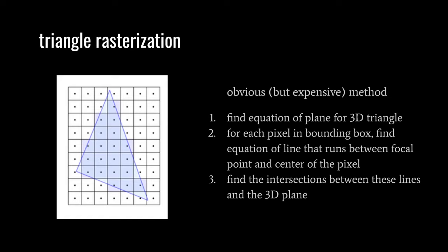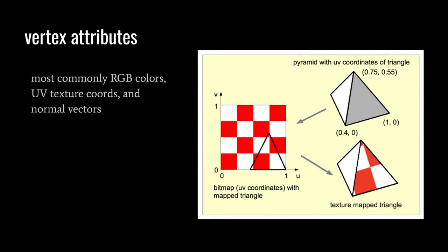The other problem with this method is that what we really want to know about a pixel is not the corresponding 3D Cartesian coordinate, but interpolations of vertex attributes. Vertex attributes can be whatever we want — data associated with each vertex that has meaning in how we want to render. The most common kinds are RGB colors, UV texture coordinates, and normal vectors. Color values determine pixel colors, and normal vectors influence lighting calculations. Generally we want a smooth lighting effect on our geometry to disguise the angularity of our triangles.